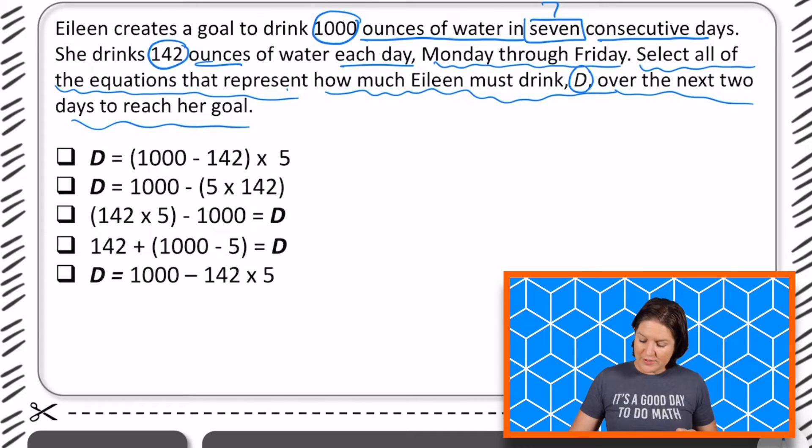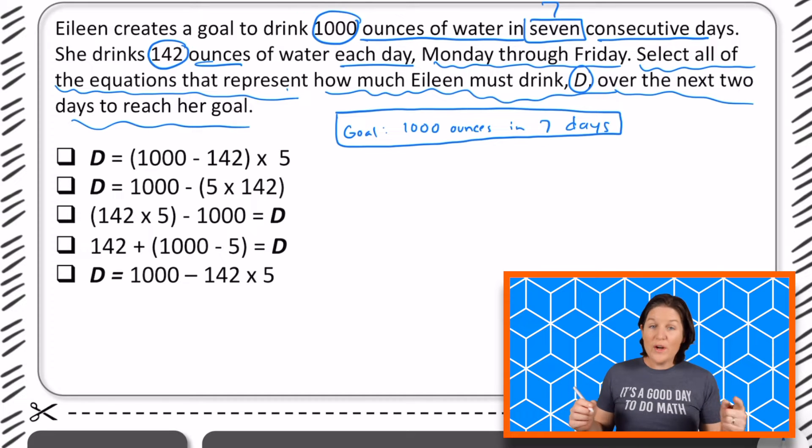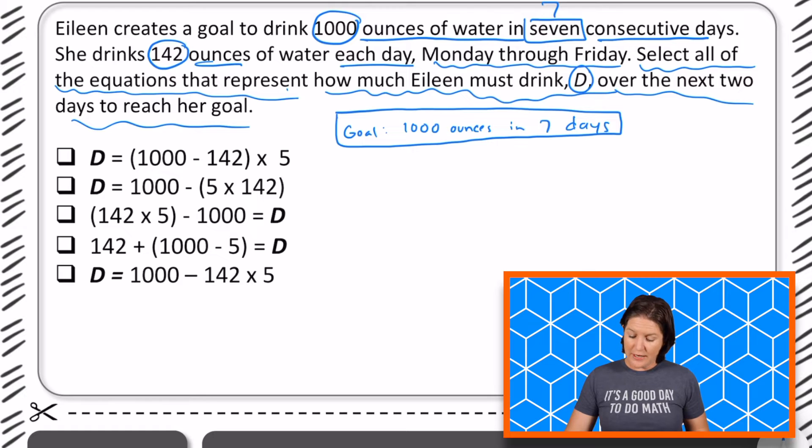So Eileen, she sets a goal to drink 1000 ounces of water in seven days. That is what she is trying to hit her target. She drinks 142 ounces each day, Monday through Friday. So if I'm kind of measuring it like this, we've got Monday, Tuesday, Wednesday, Thursday, and Friday.